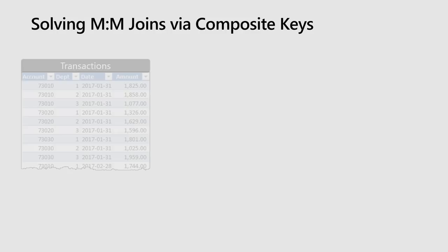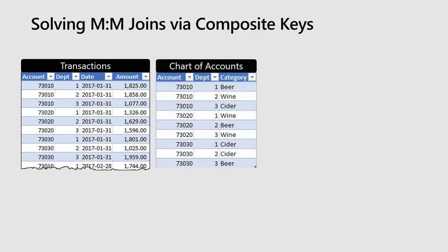The next challenge — the second most common problem I see in dimensional modeling with clients — is where we have a table with multiple different accounts and multiple repeating departments, and a chart of accounts with multiple repeating items and multiple repeating departments. How do we link these two tables together? This is a little bit trickier because you need to read your data and understand exactly what's going on in it.